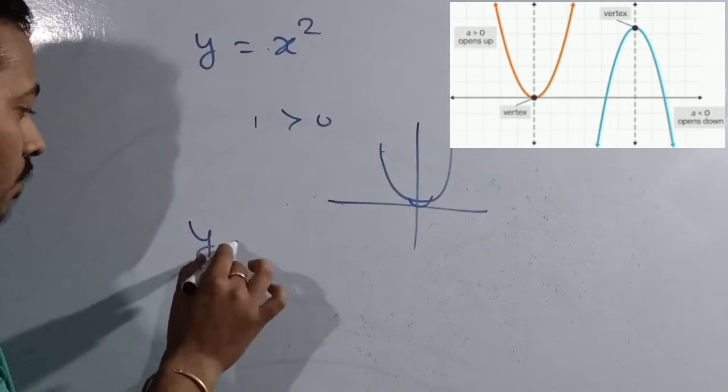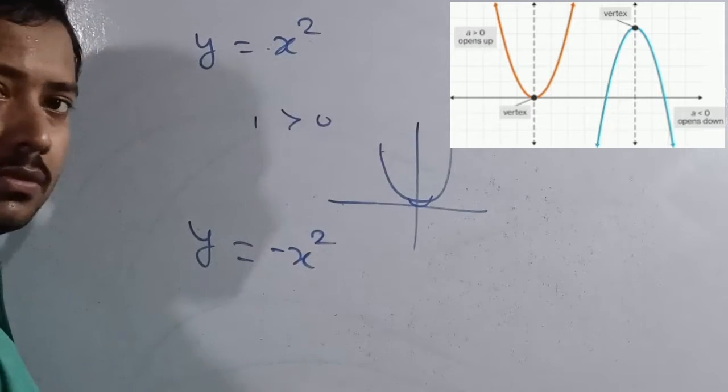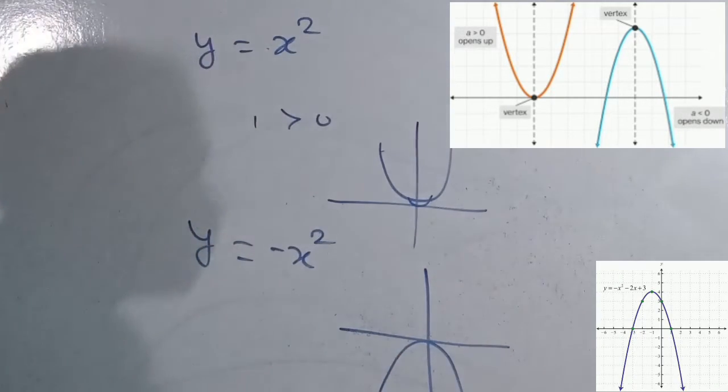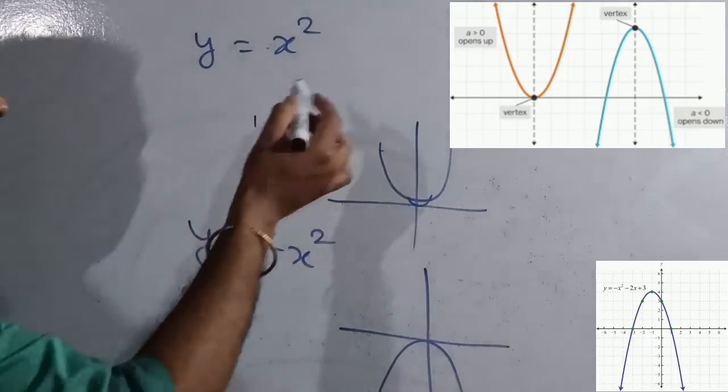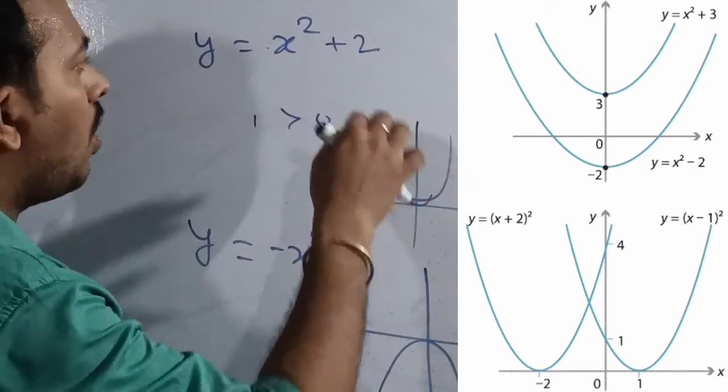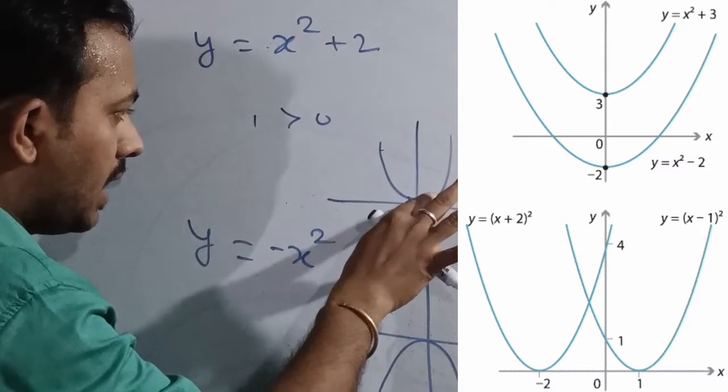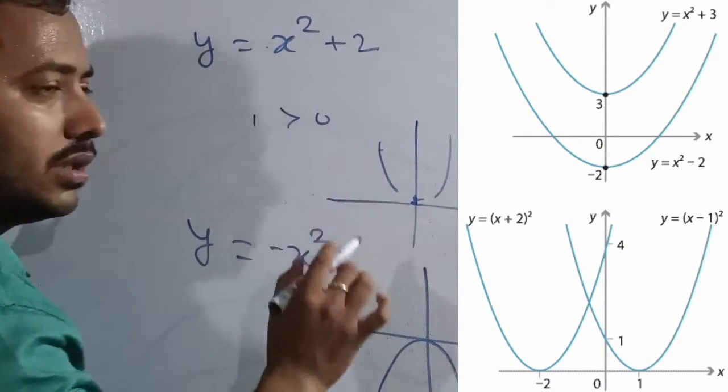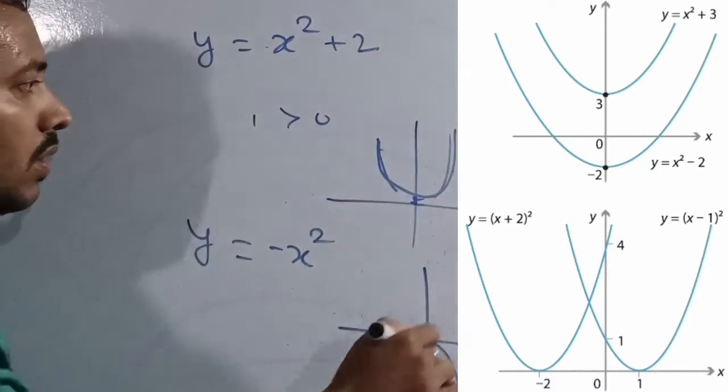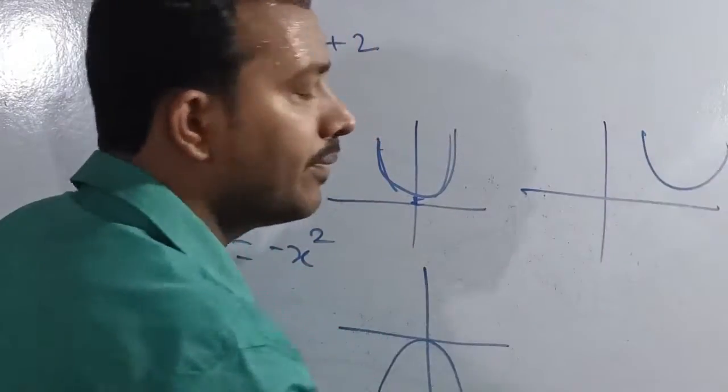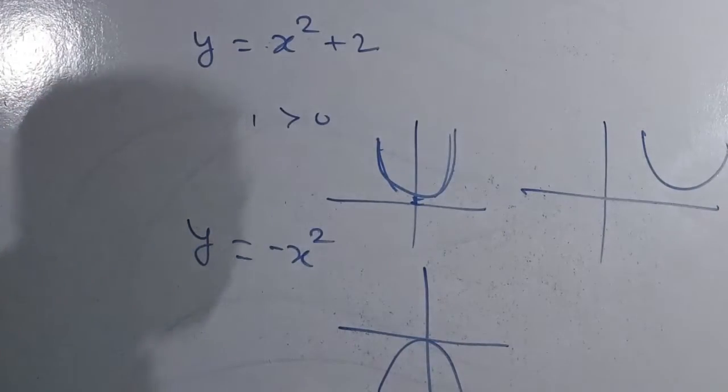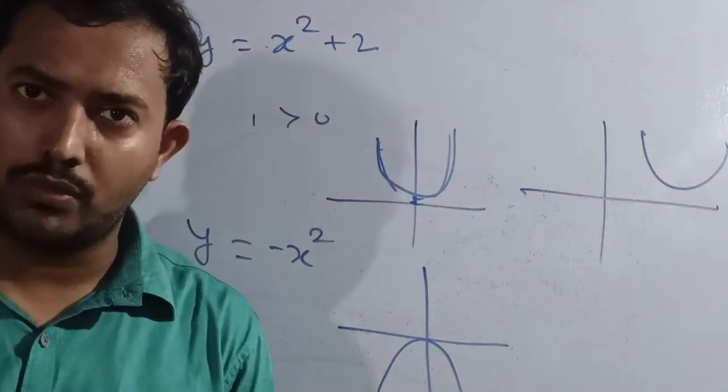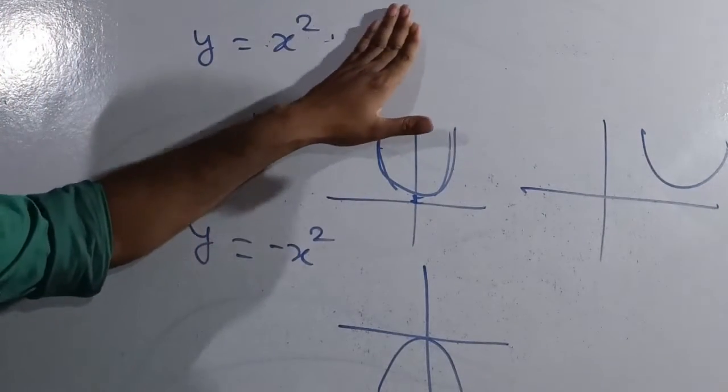If we take y equals minus x squared, then the parabola would look like this way, open downwards. And if we take plus two or anything, then it will not touch the origin. It may go like this or somewhere. So today we're going to see the problem, how to plot. Our target is this one, simple one.